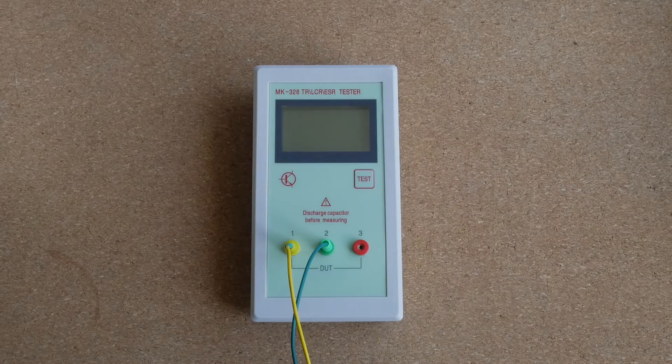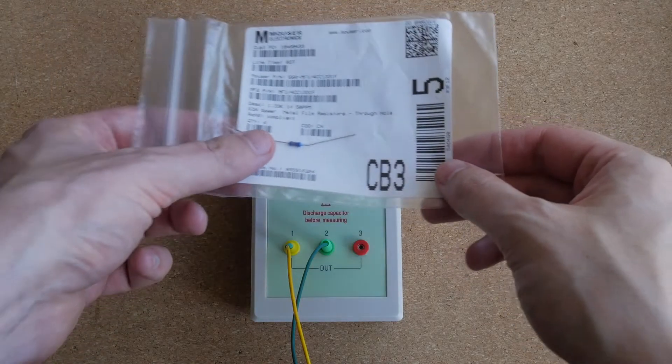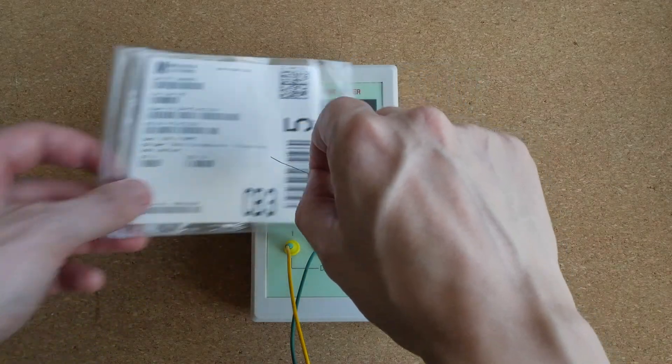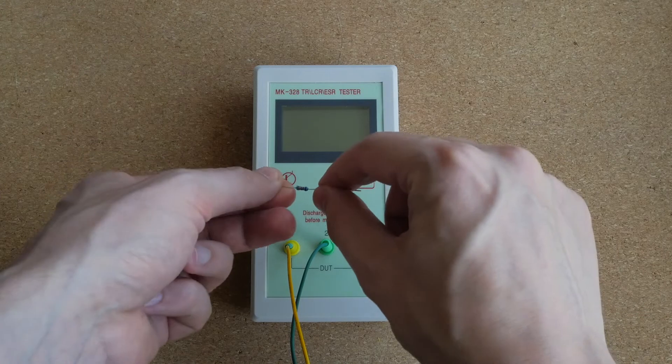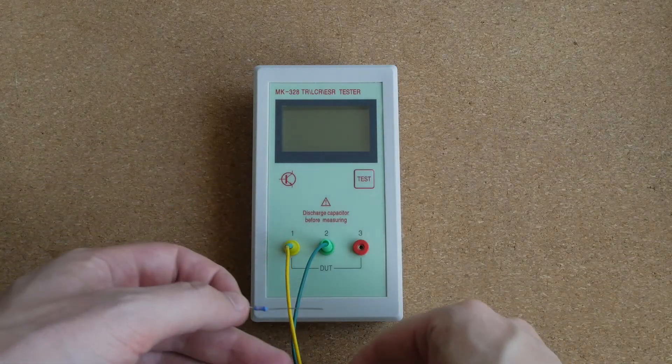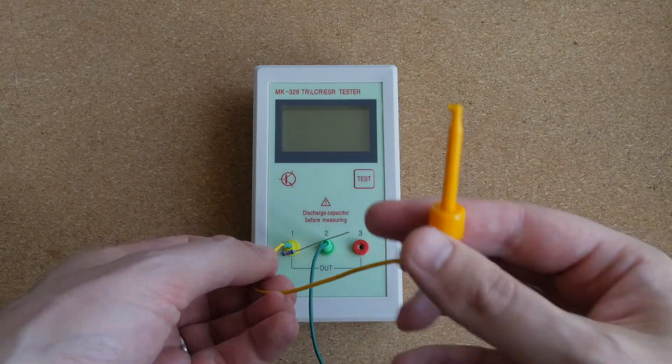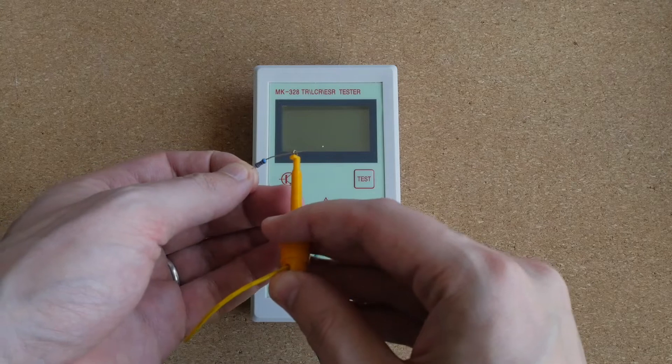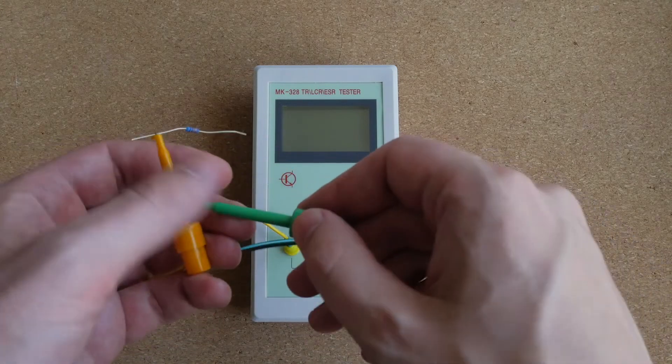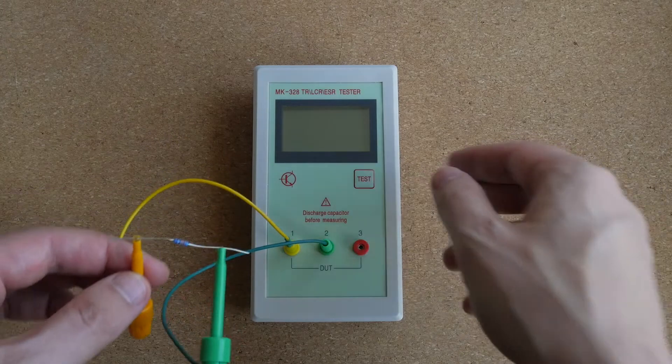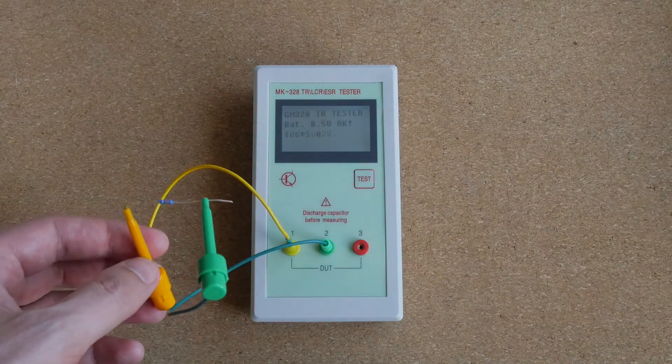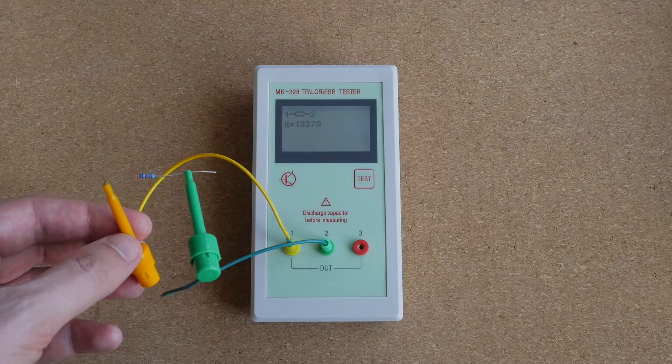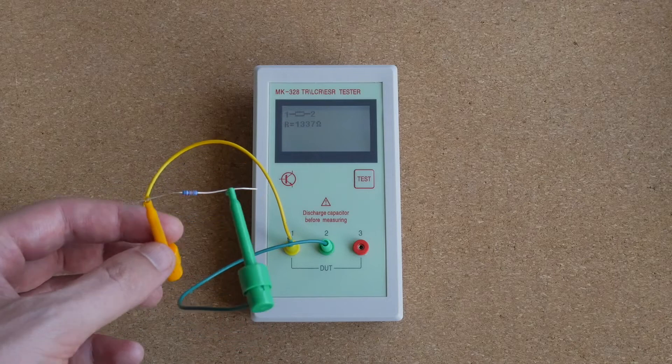Let's turn the device on and see how it performs. I will start by measuring some resistance. This is a 1.33 kilohm 1% resistor, so it should measure somewhere between 1,317 and 1,343 ohms. If we test it we get 1,337 ohms.